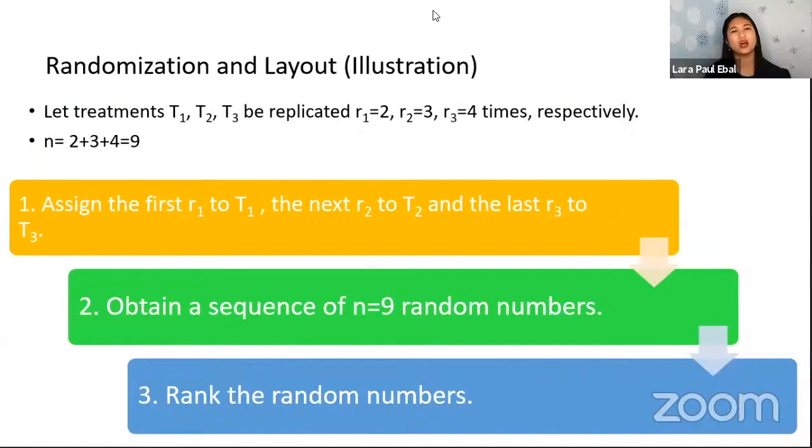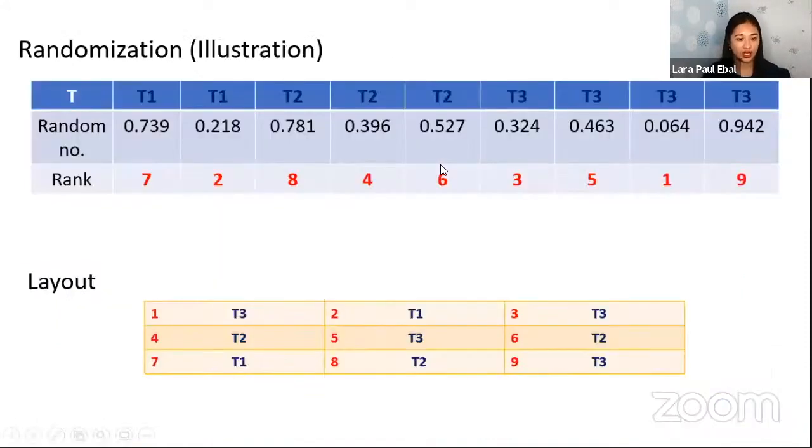Now since we are dealing with randomized experiment, so we need to have this randomization. So how do we generate or how do we conduct randomization? So first, we have the steps: assign the first R1 to T1, next R2 to T2, and the last R3 to T3. Second, obtain a sequence of random numbers. So you can use your calculator or Excel, or you don't need a software for this. Third step is to rank the random numbers.